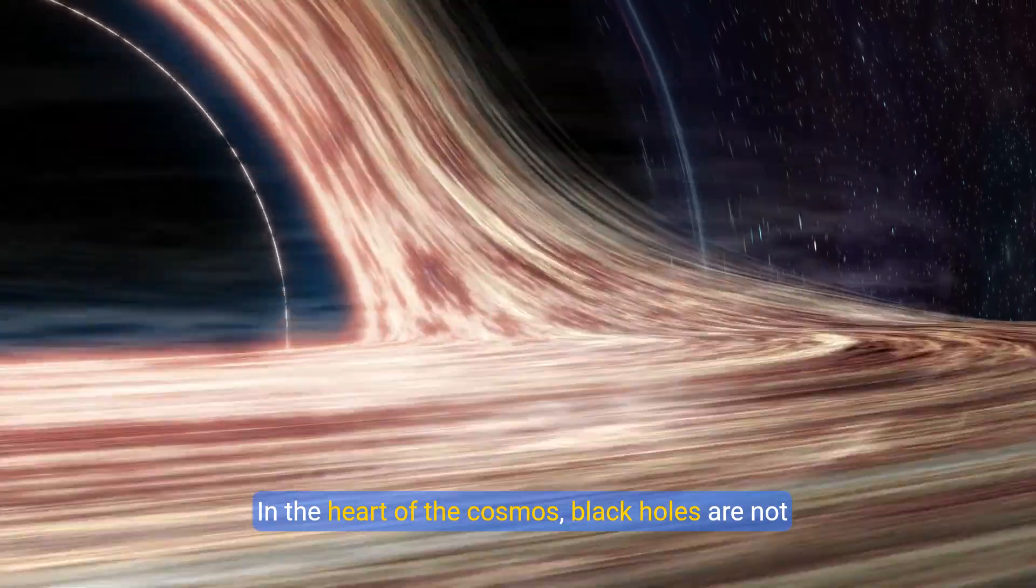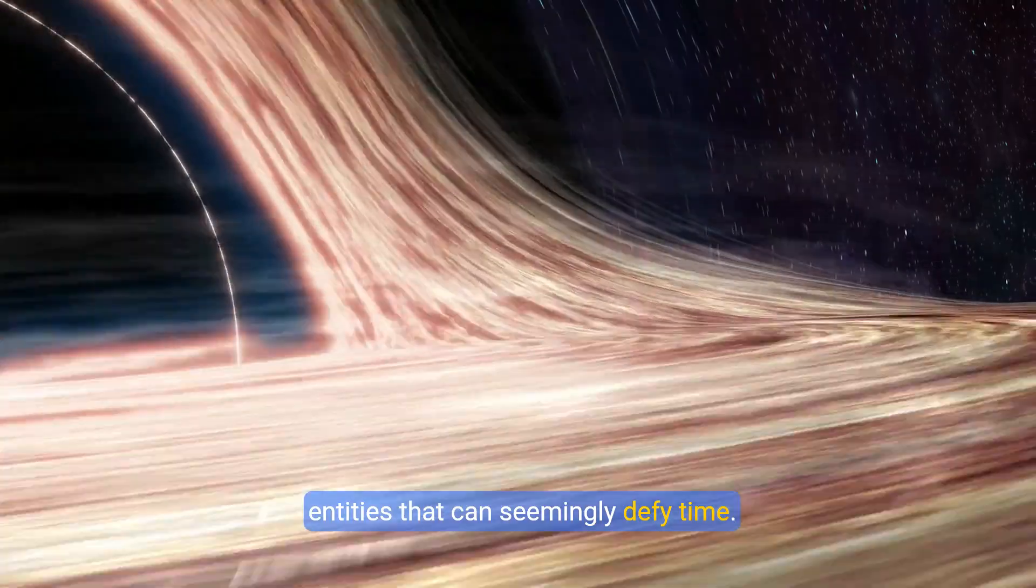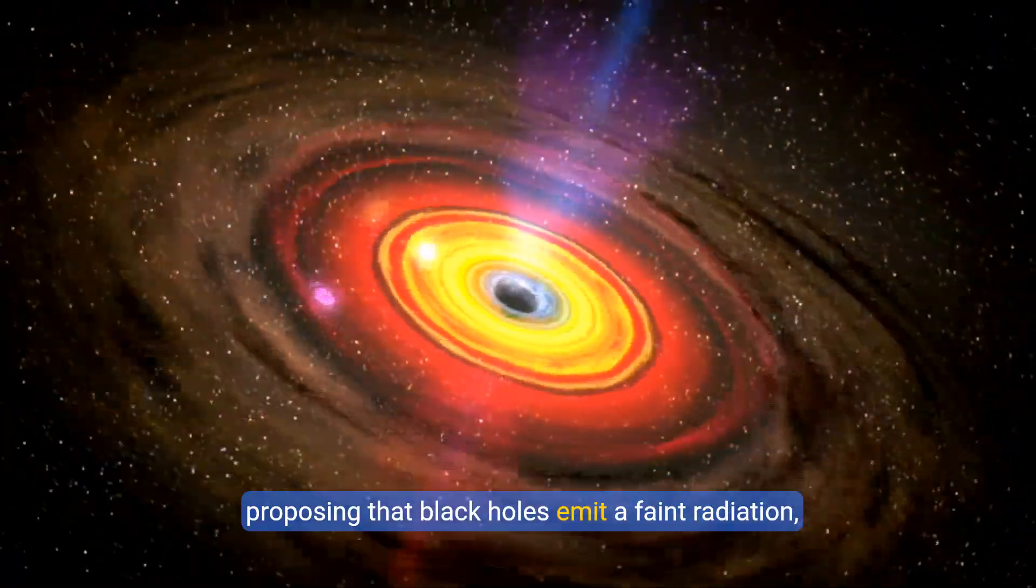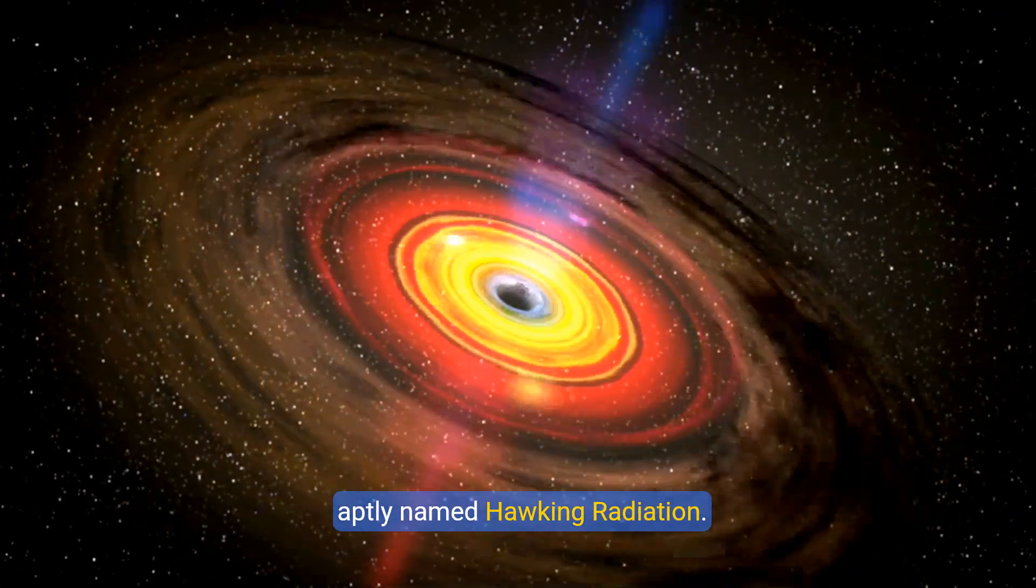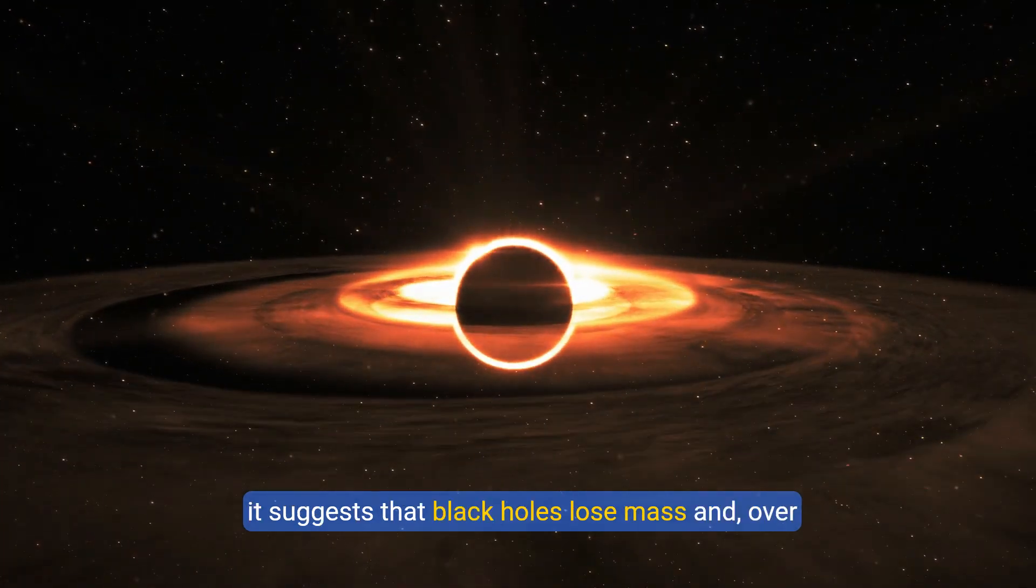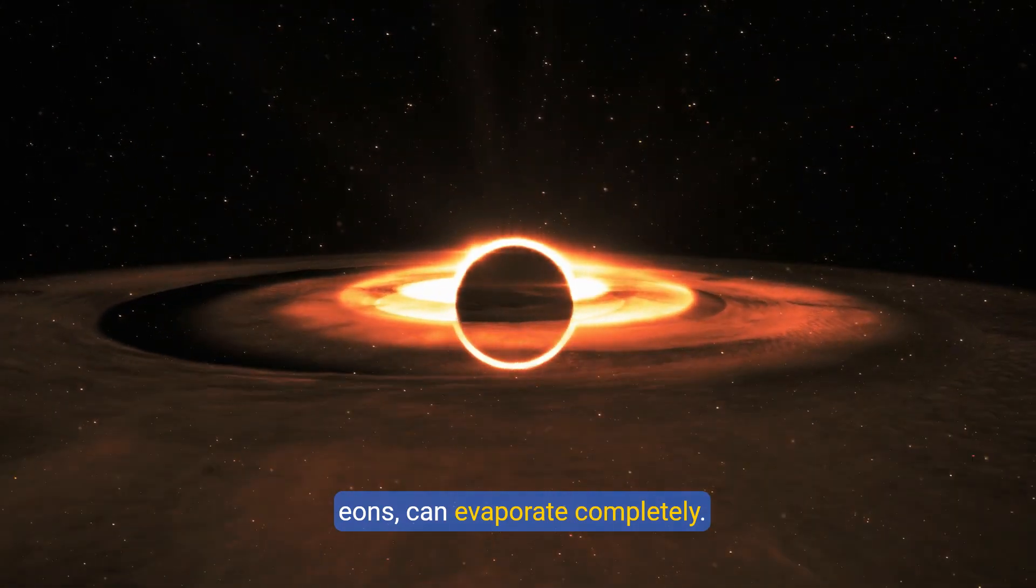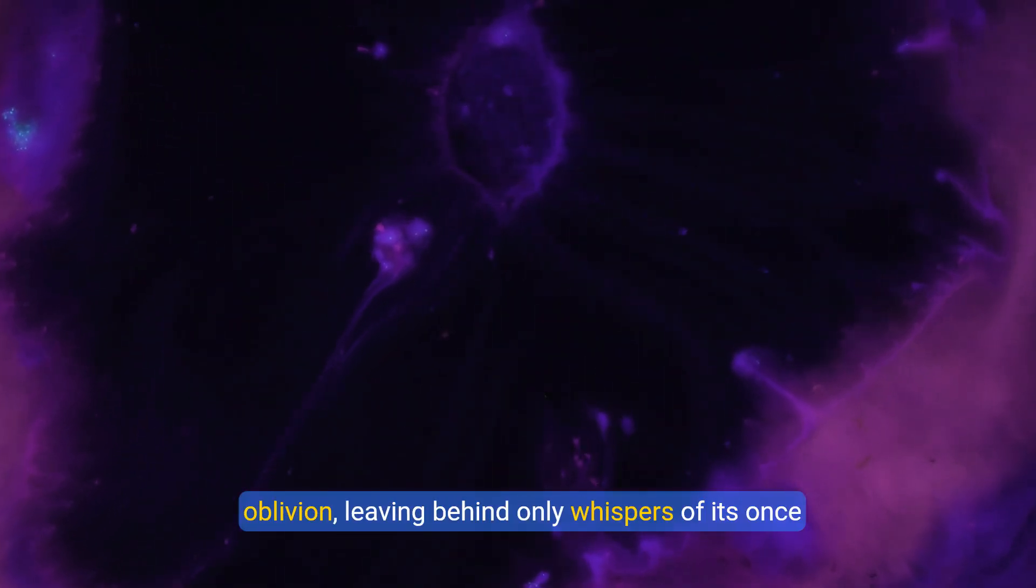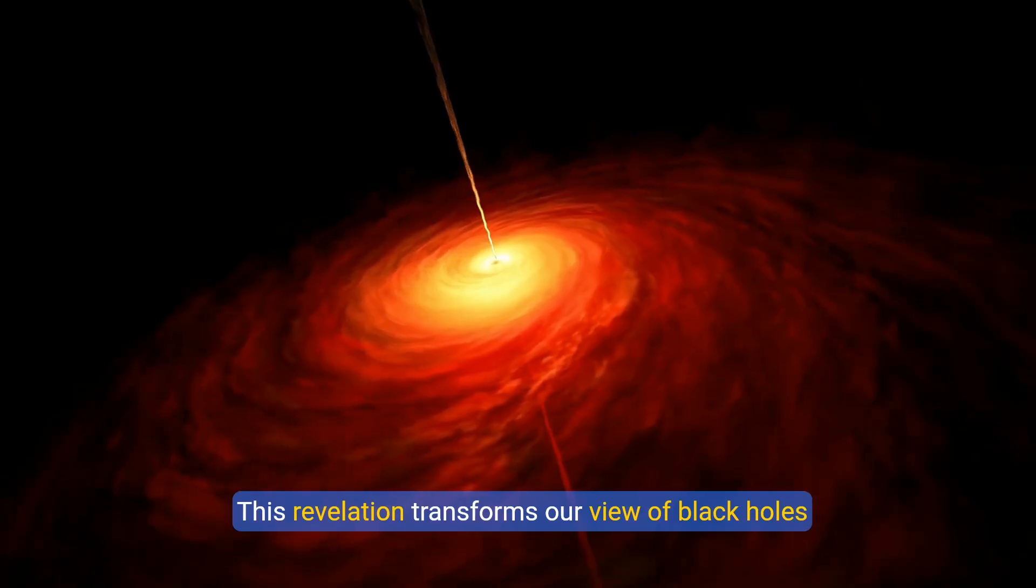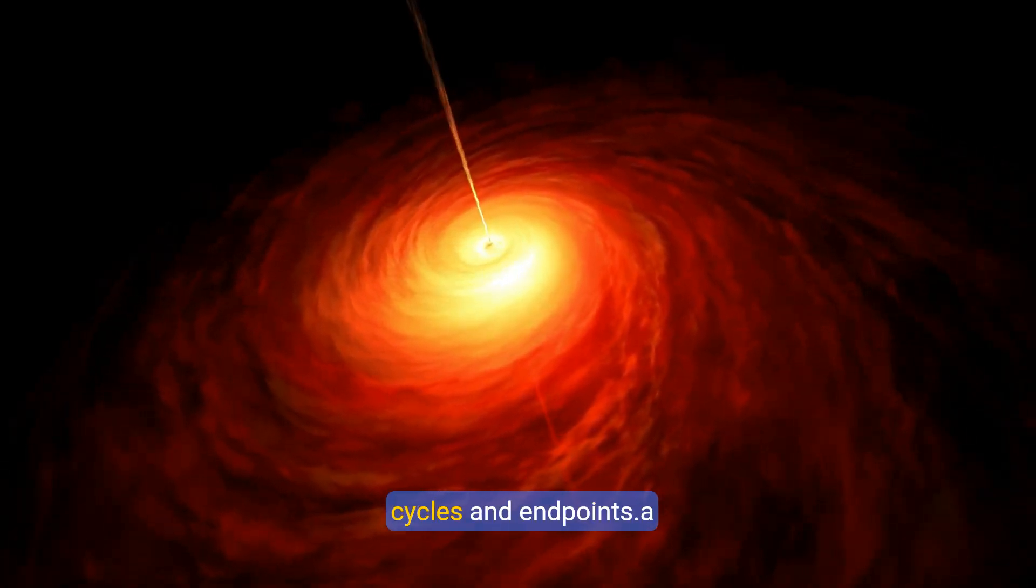In the heart of the cosmos, black holes are not just endpoints of massive stars, but dynamic entities that can seemingly defy time. Stephen Hawking revolutionized our understanding by proposing that black holes emit a faint radiation, aptly named Hawking radiation. This radiation isn't just a theoretical curiosity—it suggests that black holes lose mass, and over eons, can evaporate completely. Imagine a cosmic giant that slowly fades into oblivion, leaving behind only whispers of its once colossal presence. This revelation transforms our view of black holes from eternal traps into celestial bodies with life cycles and endpoints.